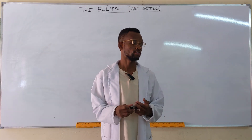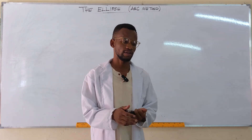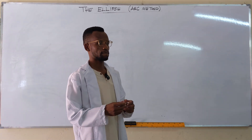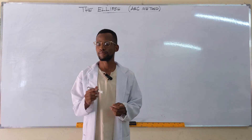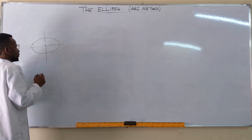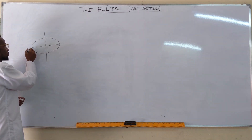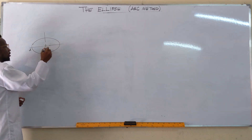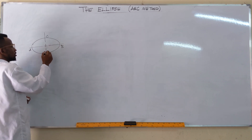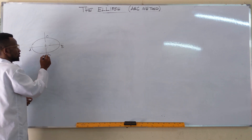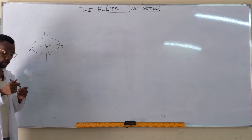Let's look at how you can construct an ellipse when you've been given the focal points, using the arc method. We consider an ellipse with major axis AB and the minor axis CD, with center O.